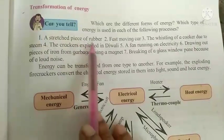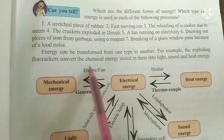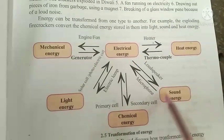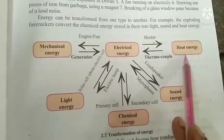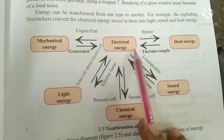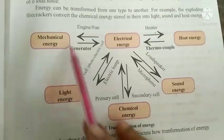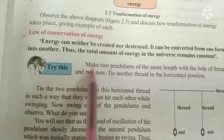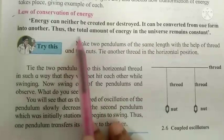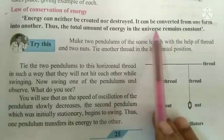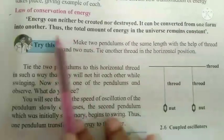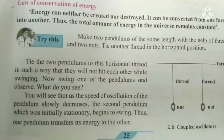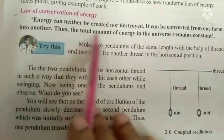Energy can be transferred from one type to another. Examples include electric energy converting into heat energy and vice versa, as well as sound energy, chemical energy, light energy, and mechanical energy. The Law of Conservation of Energy states: energy can neither be created nor destroyed; it can only be converted from one form into another. Thus, the total amount of energy in the universe remains constant.